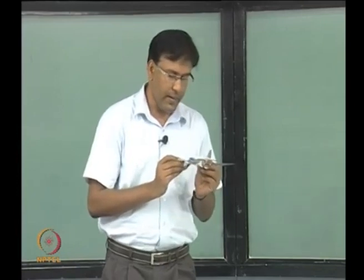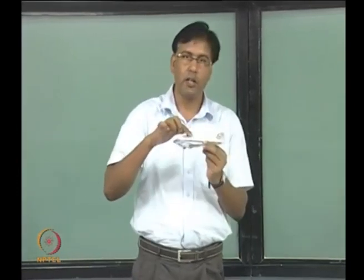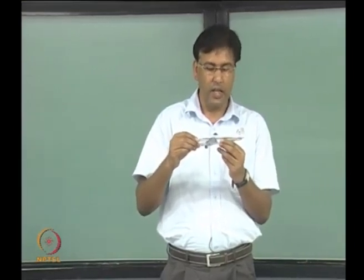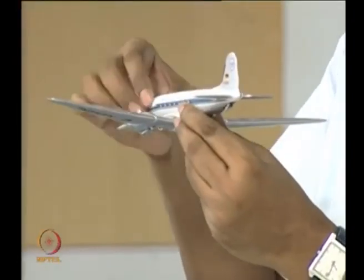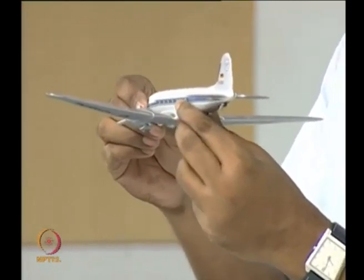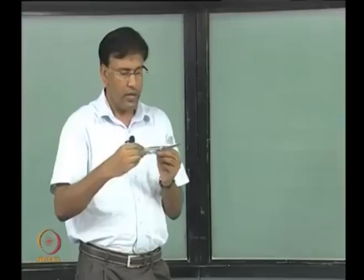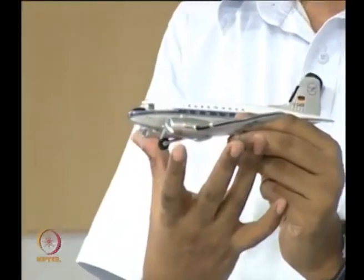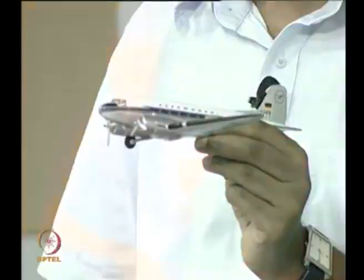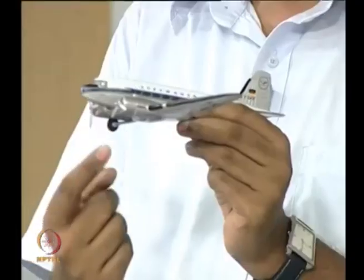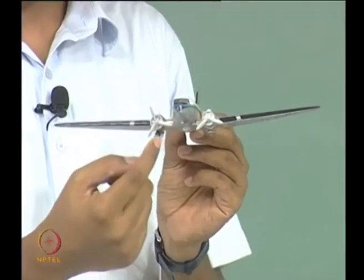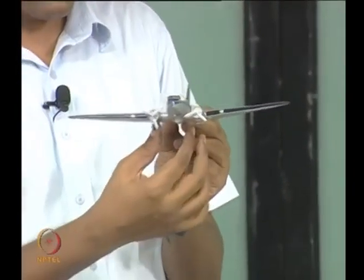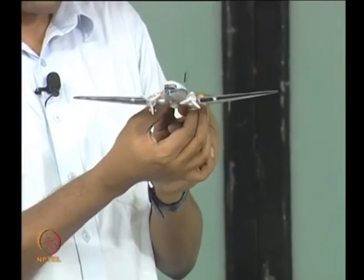This part of the aircraft which is used to carry the passengers and the freight is called the fuselage. Wings are these two surfaces. There is a twin engine propeller aircraft, so you see two engines symmetrically located with respect to a plane that we will discuss.